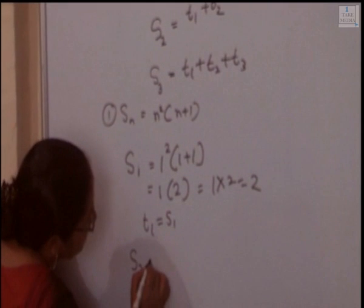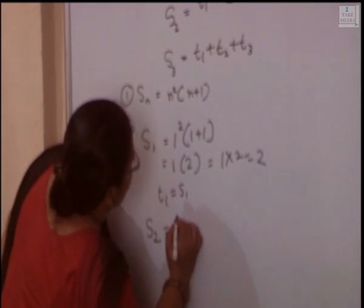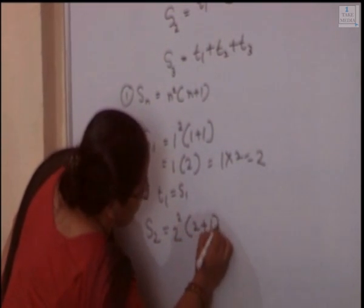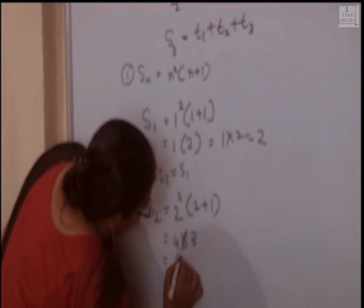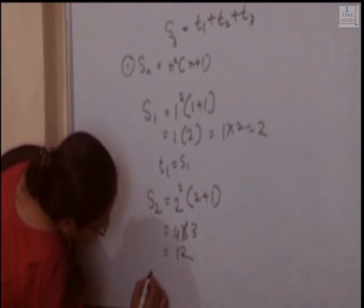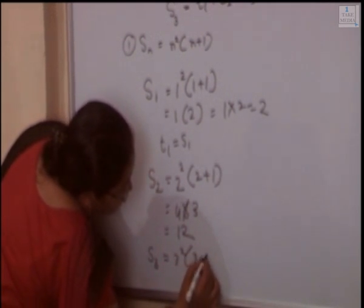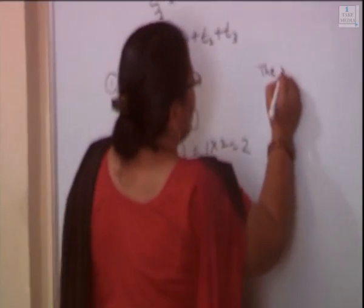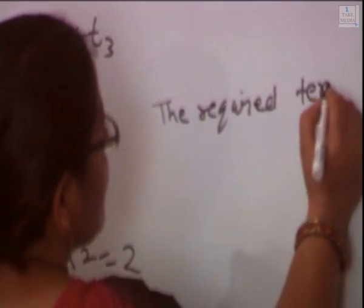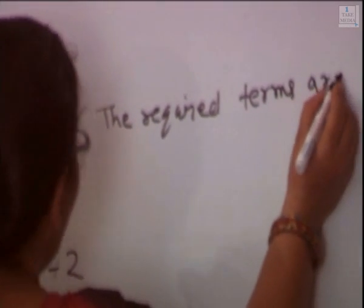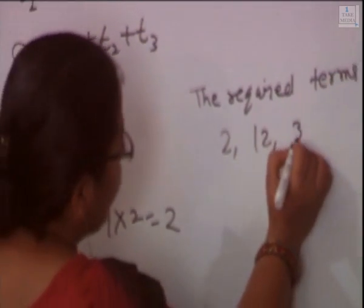If we calculate S2, we substitute n equal to 2: 2² plus 2 plus 1. So 2 square is 4, 4 plus 2 plus 1 equals 7... giving S2 equal to 12. For S3, substitute n equal to 3: 3² plus 3 plus 1, giving S3 equal to 36. The required sums are S1 equal to 2, S2 equal to 12, and S3 equal to 36.